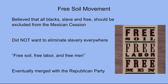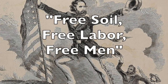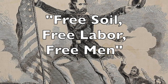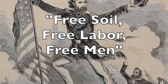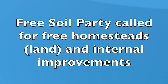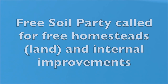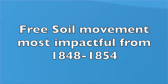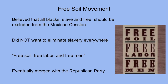In 1848, Northerners favoring this approach to the territories organized the Free Soil Party, which adopted the slogan: Free Soil, Free Labor, and Free Men. In addition to its chief objective of preventing the extension of slavery, the new party also advocated free homesteads or public land grants to small farmers and internal improvements. The Free Soil Movement was most impactful between 1848 and 1854, and was eventually absorbed by the Republican Party.